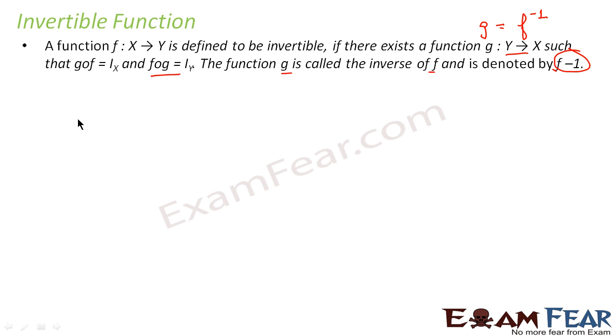If you have a function from X to Y and there is this function g from Y to X, just the inverted domain and codomain, and if you take f of g that becomes I_X, if you take g of f that becomes I_Y, in that case g is called the inverse of this function.